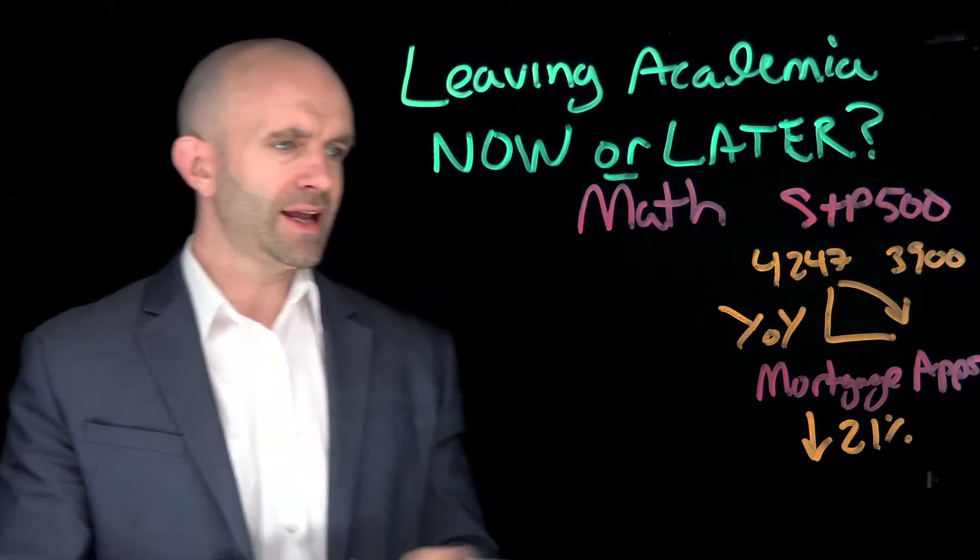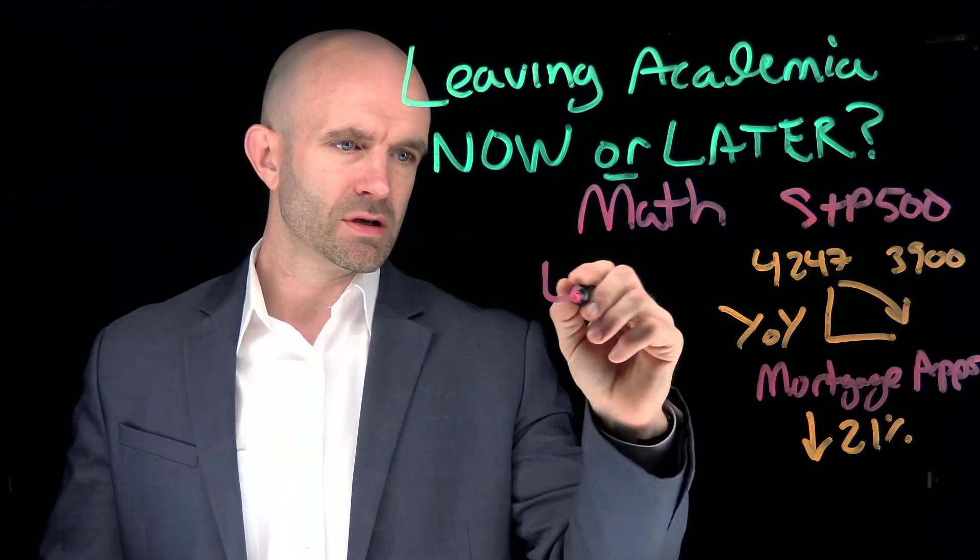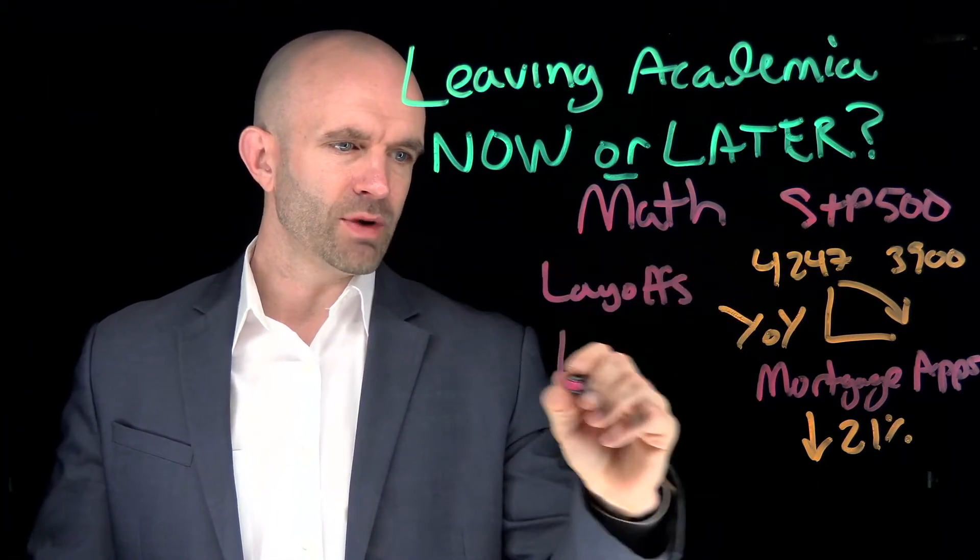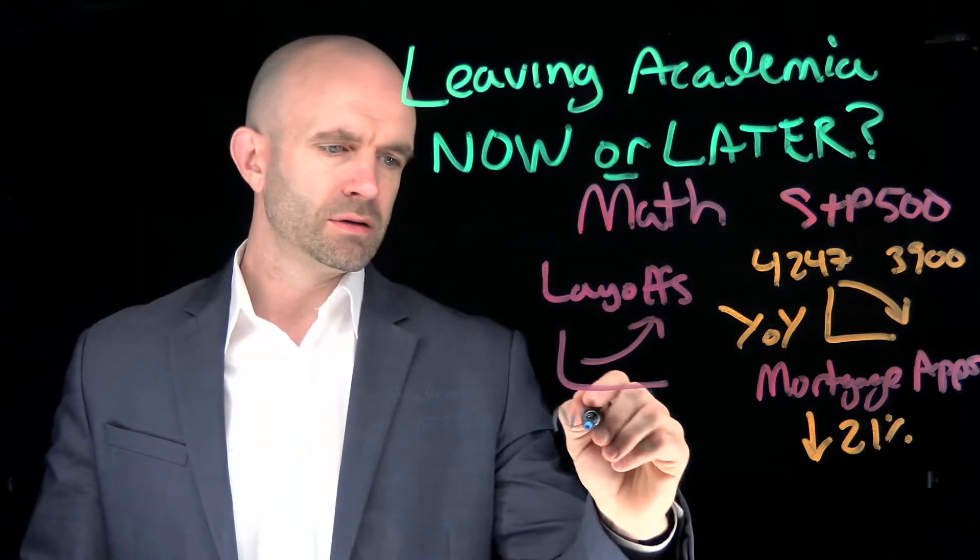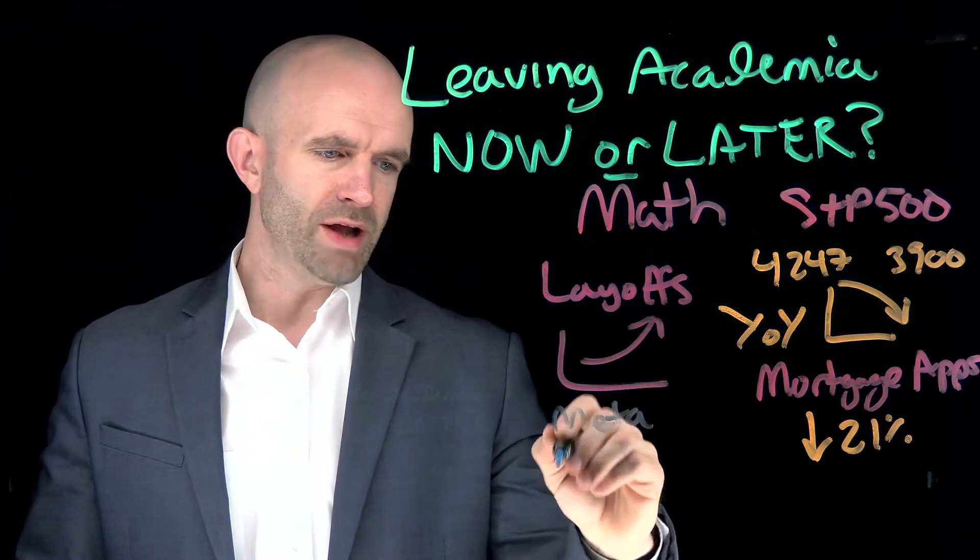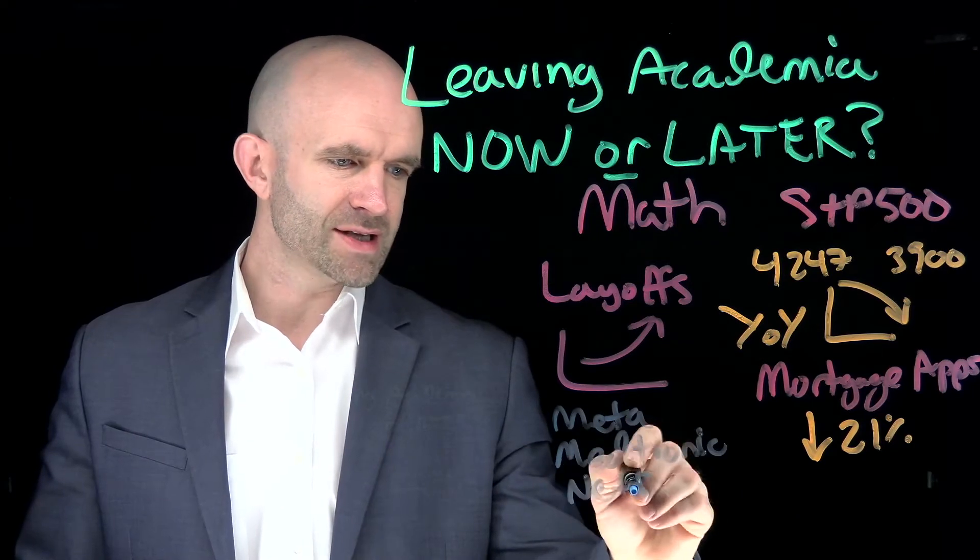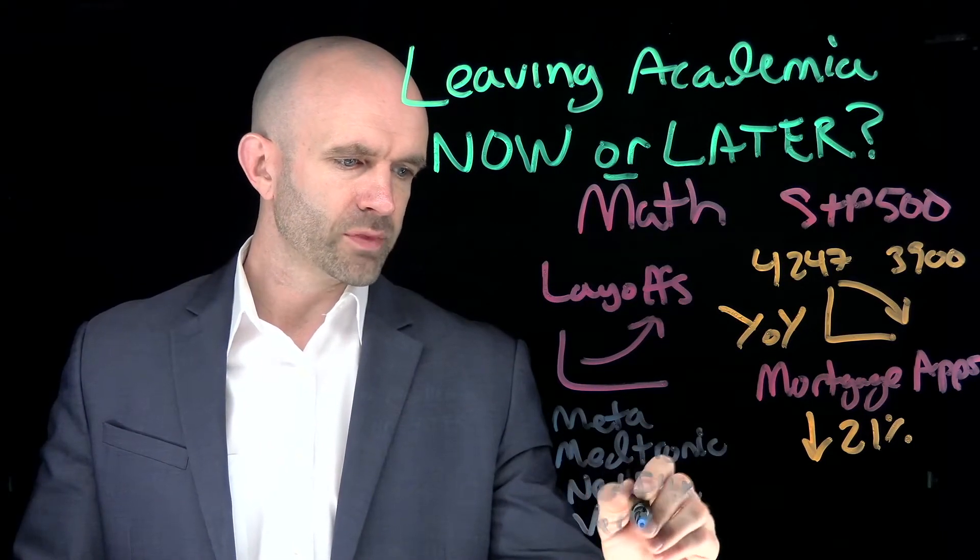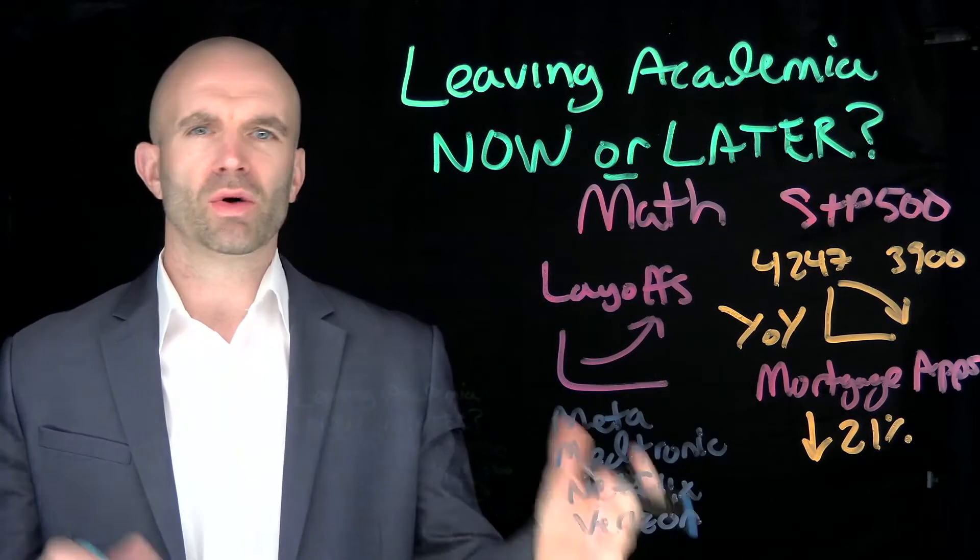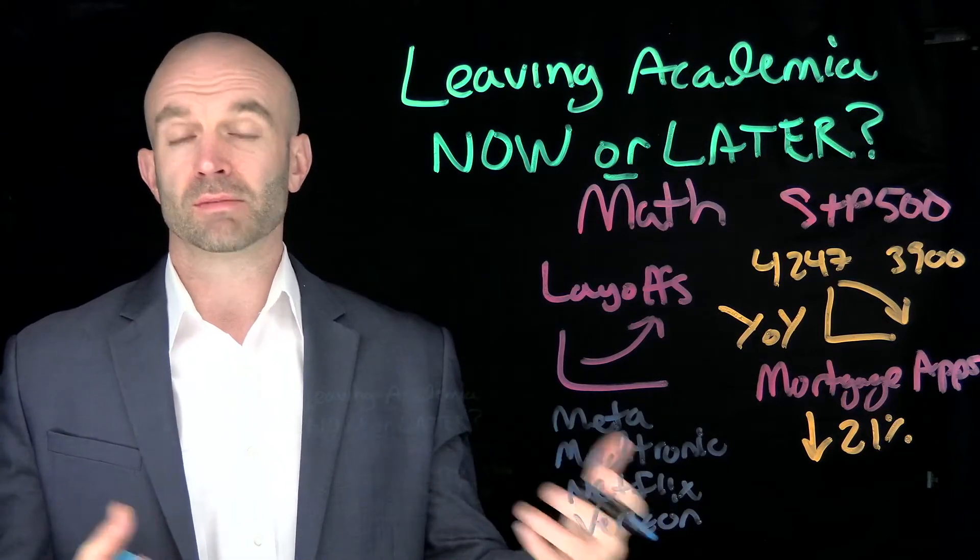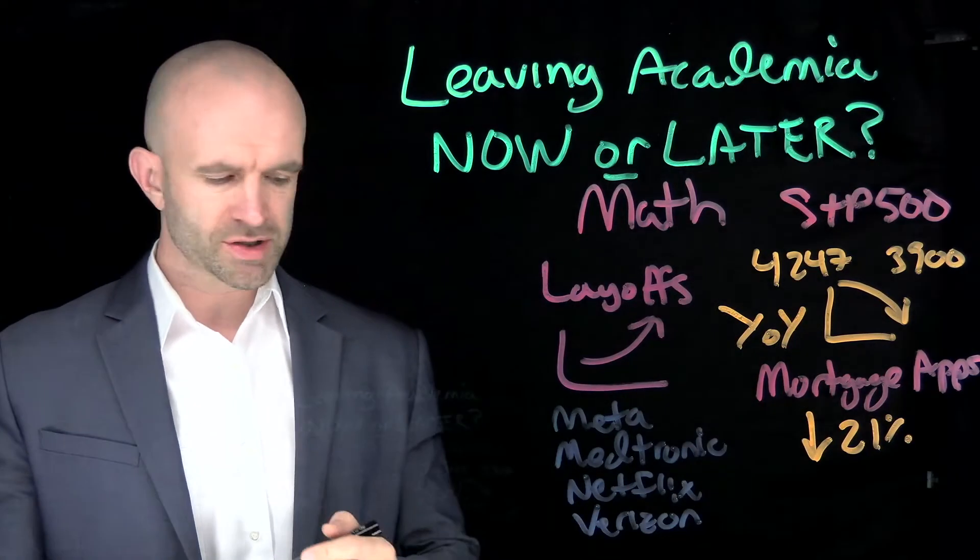As far as other leading and lagging indicators, there's layoffs. Layoffs are a leading indicator, and we've seen those go up quite a bit. There's a lot of companies all the way from Meta to Medtronic to Netflix to Verizon to Home Depot that have done layoffs or have hiring freezes, creative ways they want to name it, similar to what academia does, to say things are headed in a different direction now. The job market's contracting.